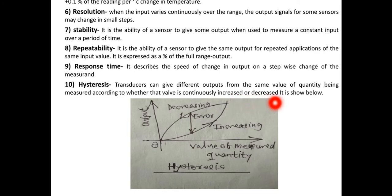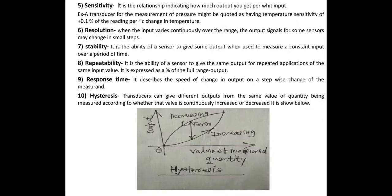According to whether that value is continuously increased or decreased. Now you see here the output is considered along y-axis and the input, the value of measured quantity, is considered along the x-axis. You see here it is continuously increasing, it is continuously decreasing. So this is the error. This is known as hysteresis. Thank you.